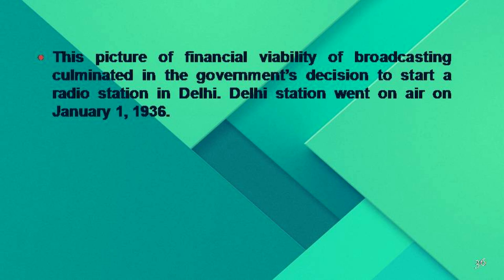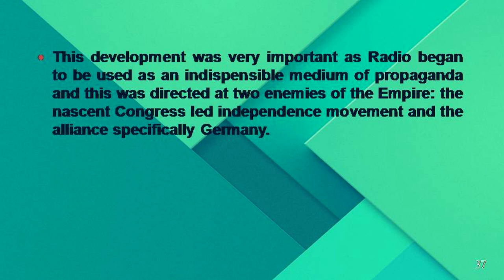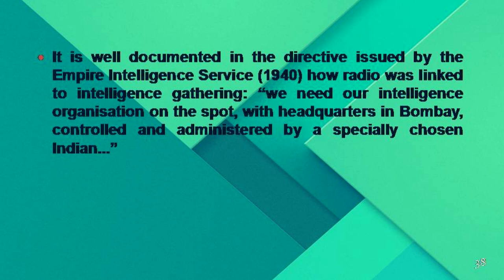The picture of broadcasting's financial viability culminated in the government's decision to start a radio station in Delhi, which went on air on January 1, 1936. This was important as radio began to be used as an indispensable medium of propaganda directed at two enemies of the empire: the nascent Congress-led independence movement and the alliance, specifically Germany. This was documented in the directive issued by the Empire Intelligence Service in 1940, describing how radio was linked to intelligence gathering.